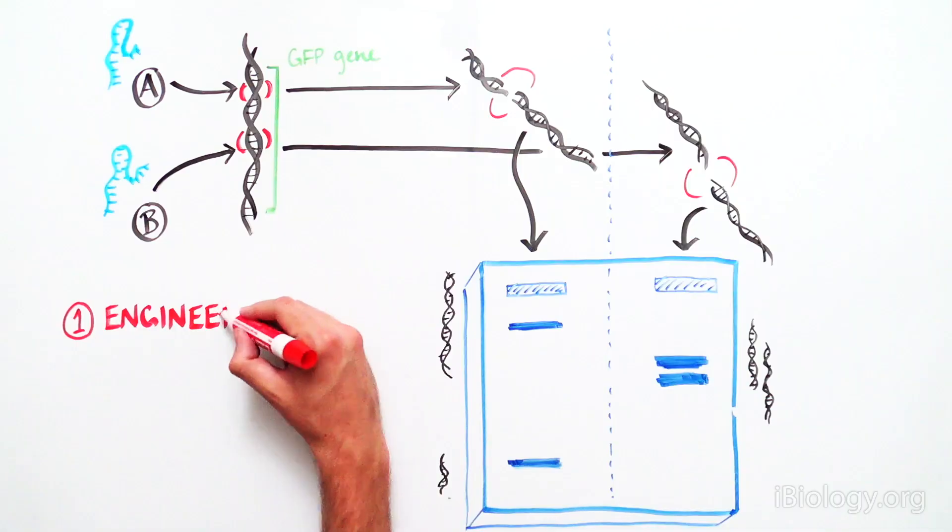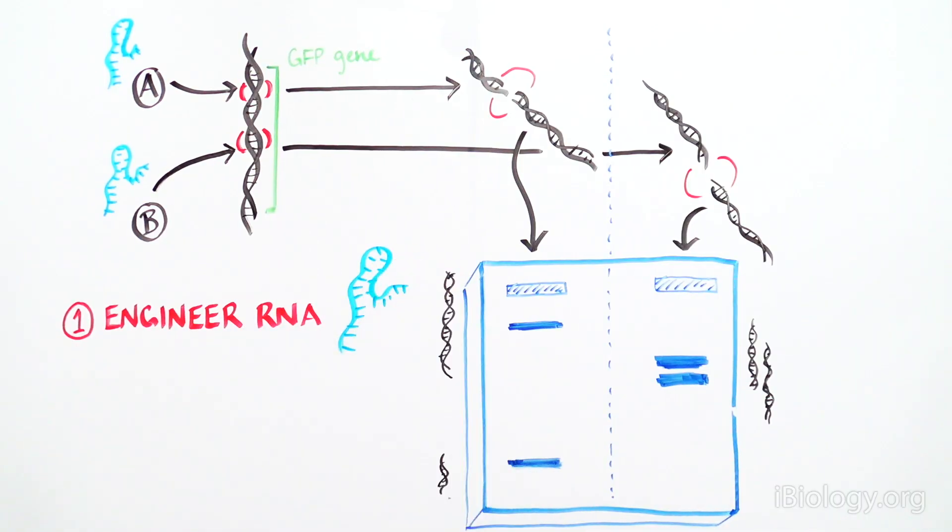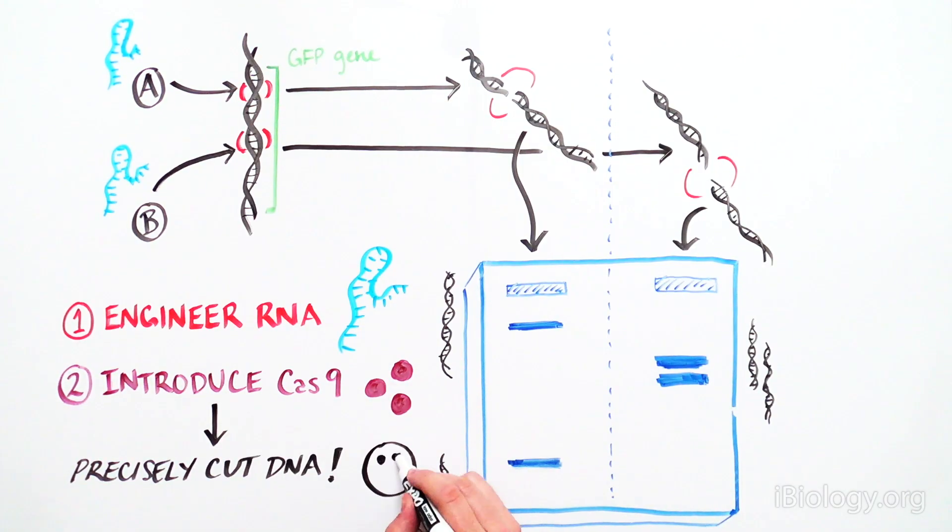This was huge as it meant that scientists could engineer one RNA sequence, introduce Cas9, and cut DNA at a specific location of their choice.